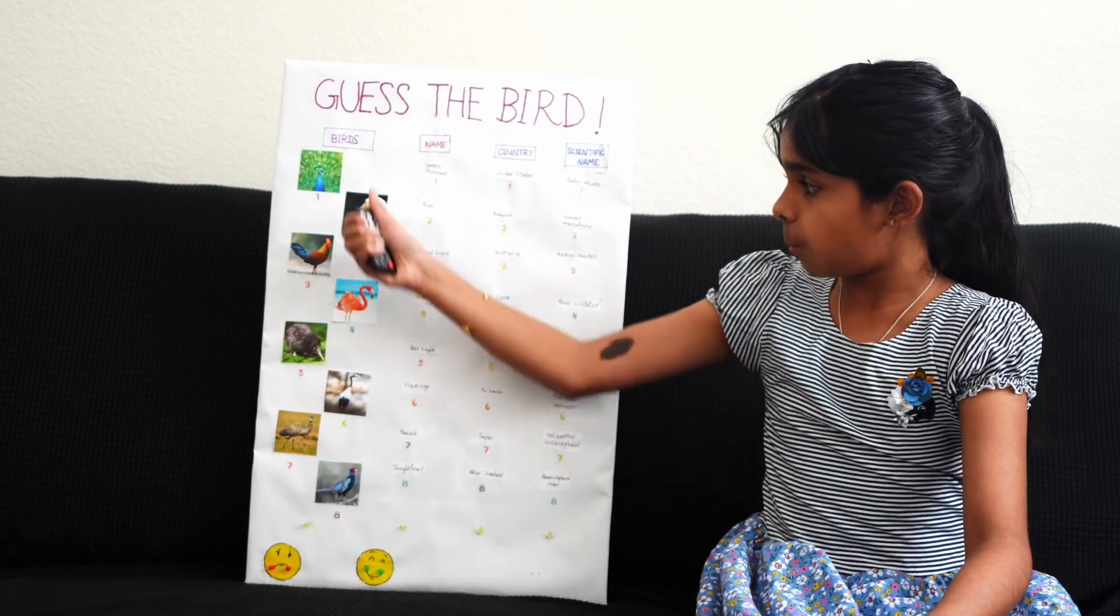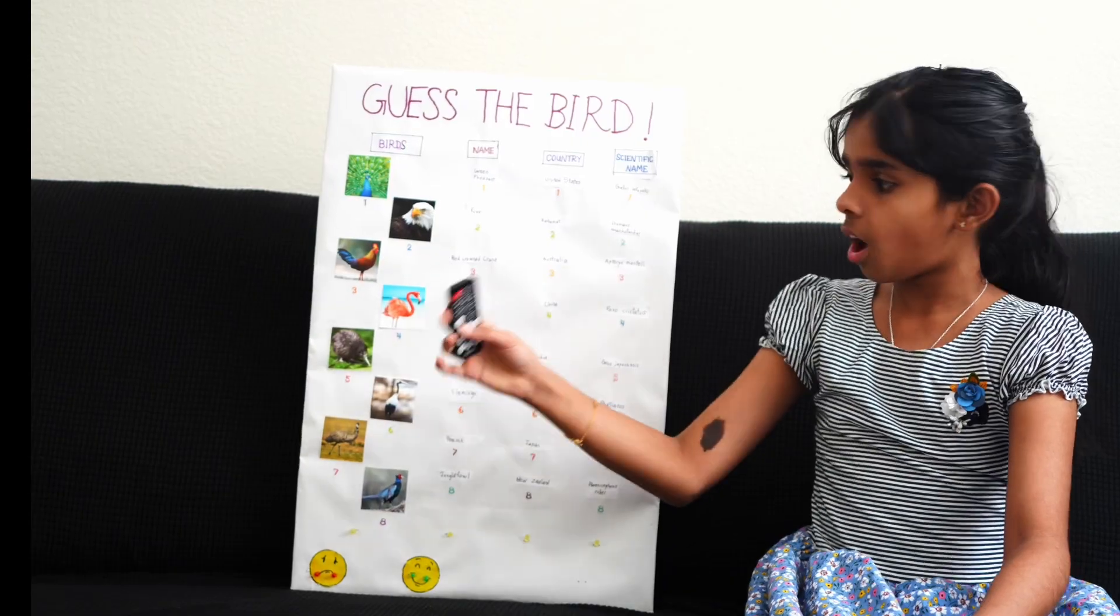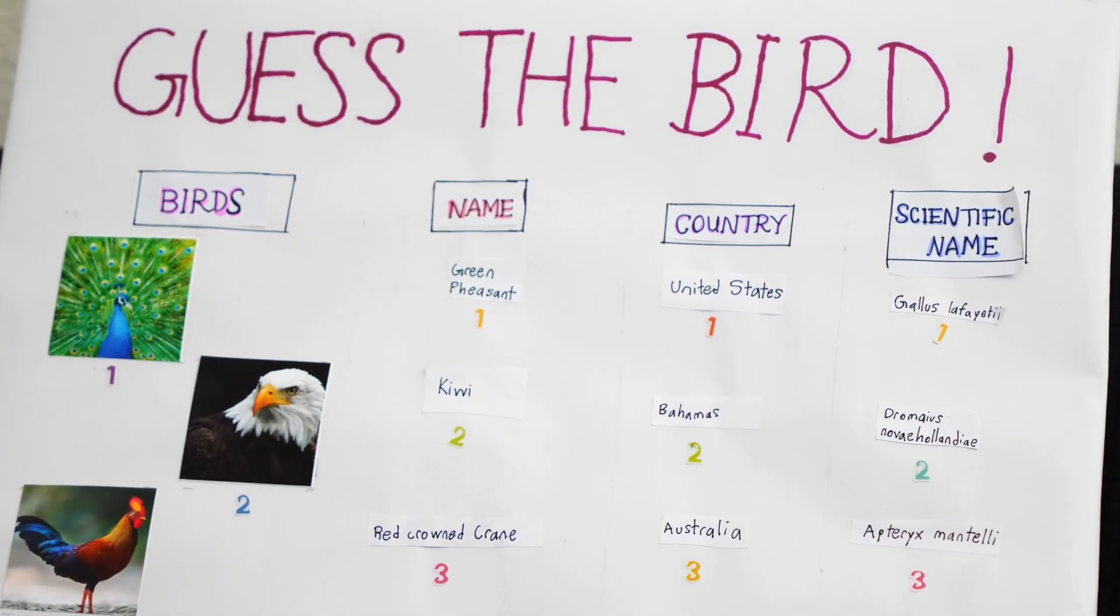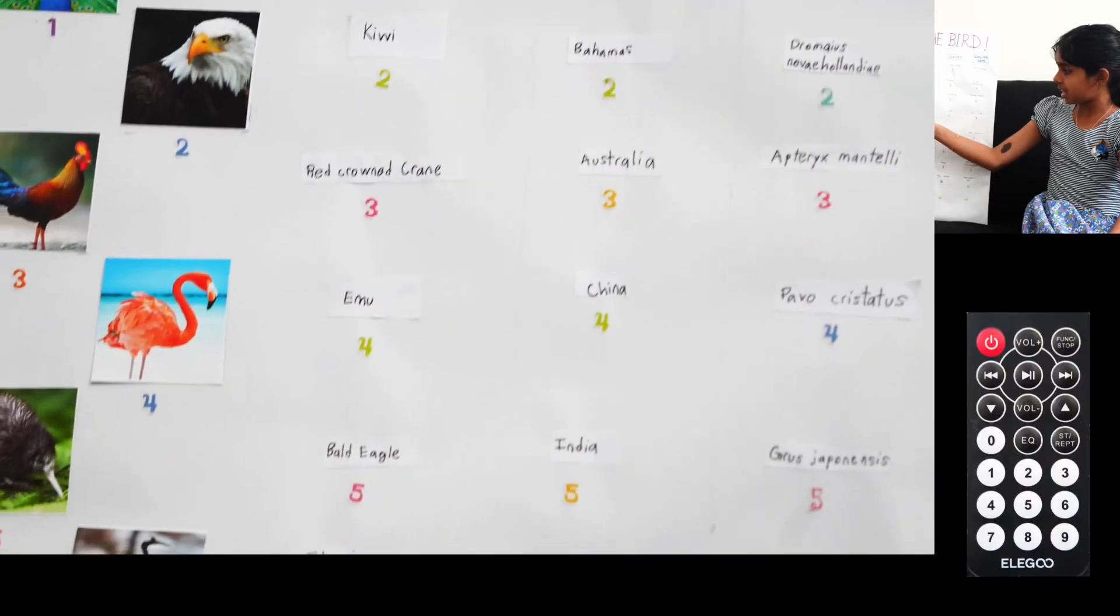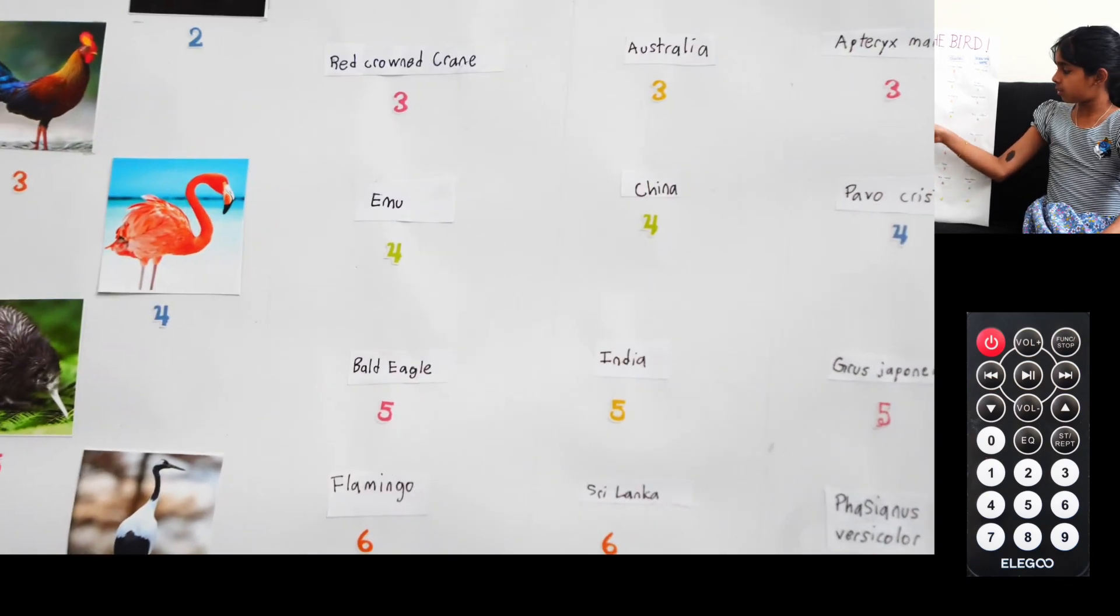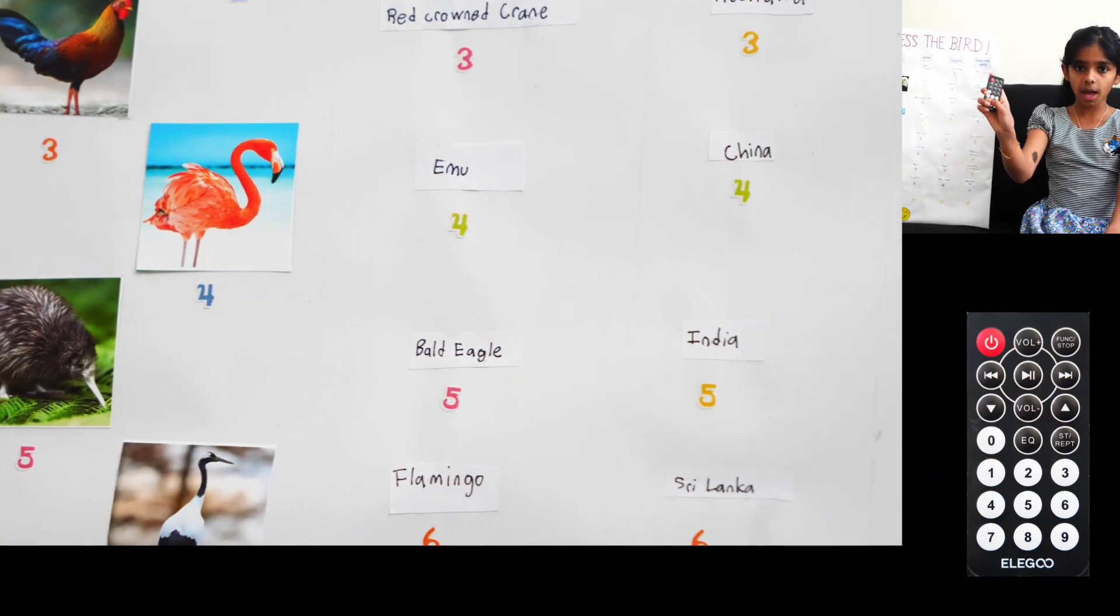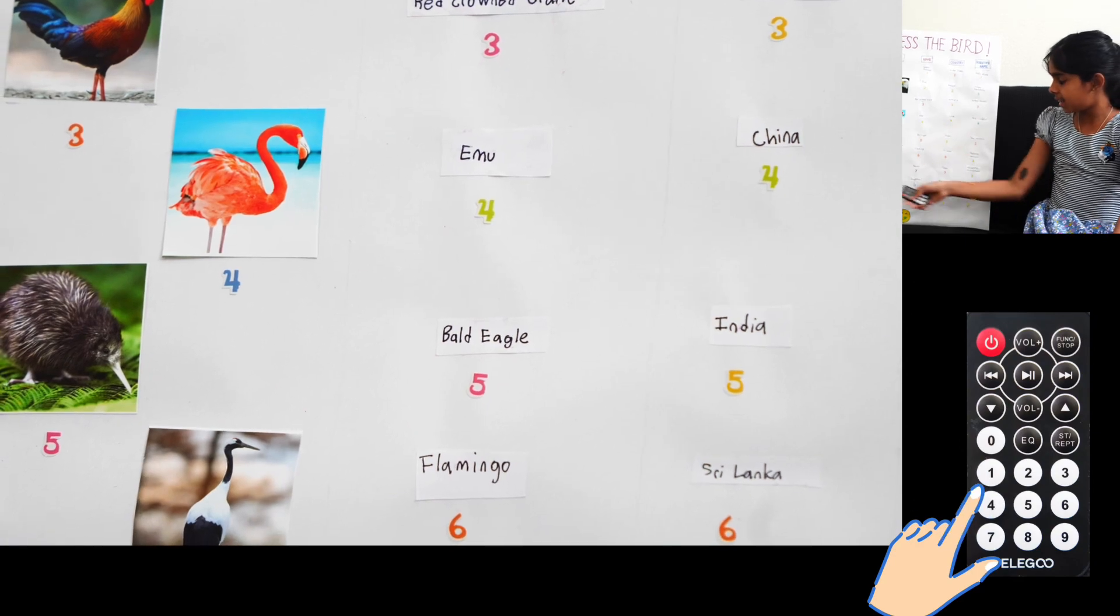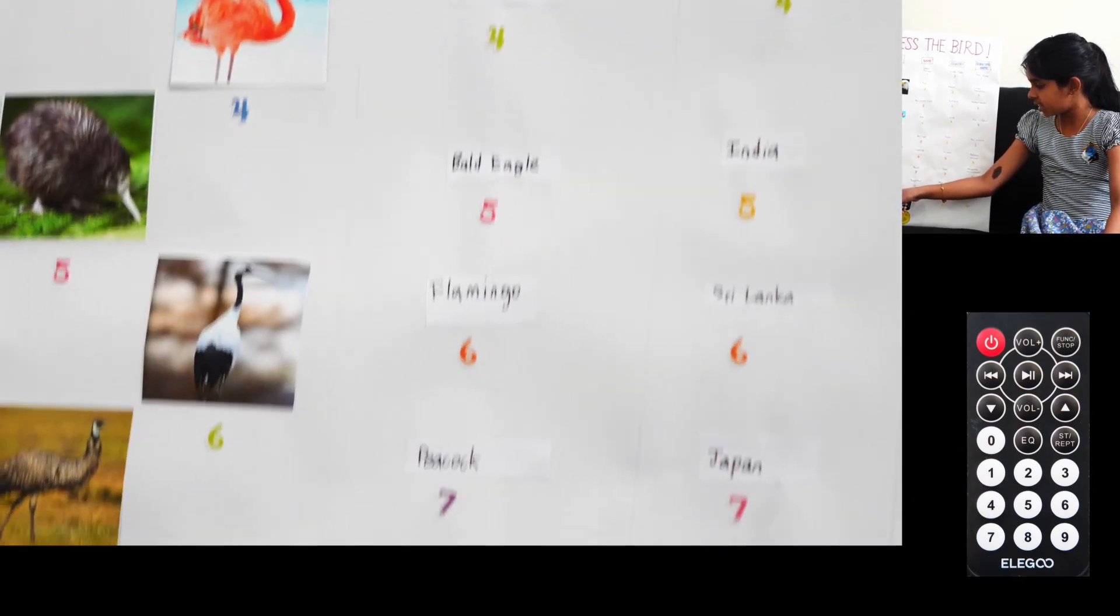Once you've chosen the bird, you select the number below it on the remote. For example, I'm going to choose the flamingo picture over here. And the flamingo's number is four. So on the remote, I'm going to press four. And then below it, an LED light lights up.